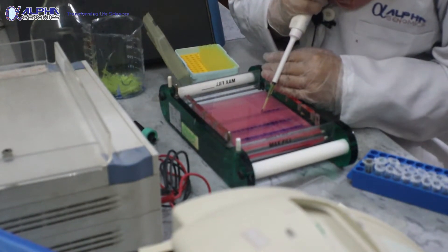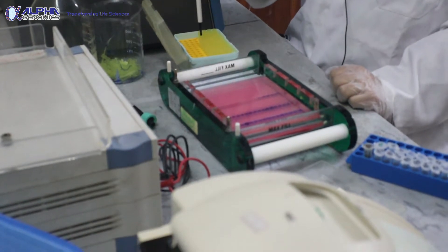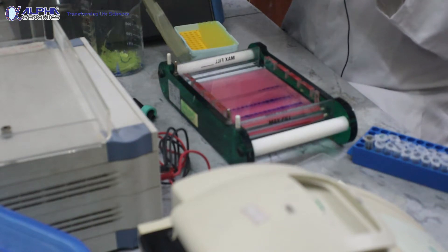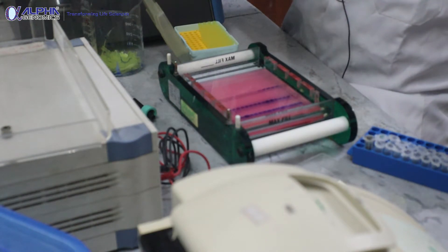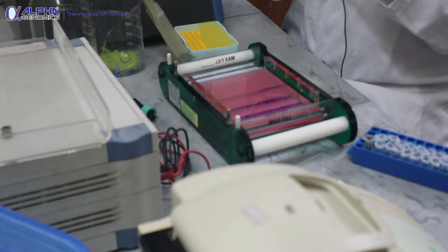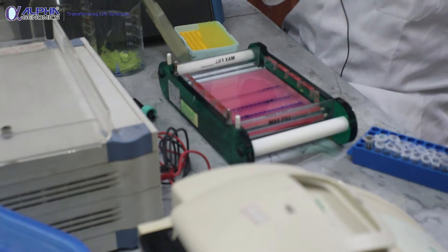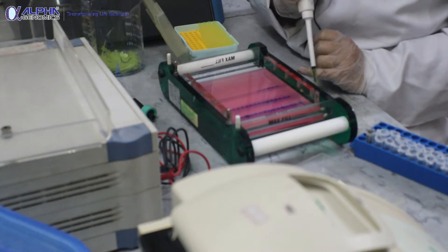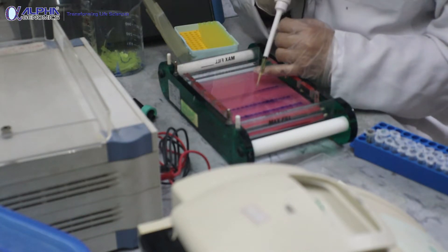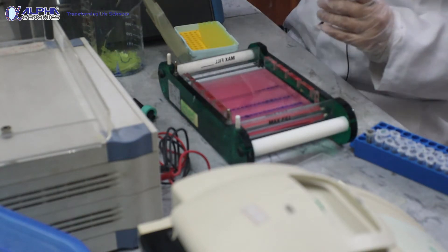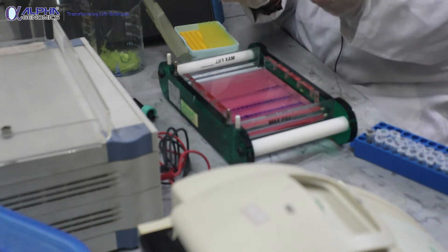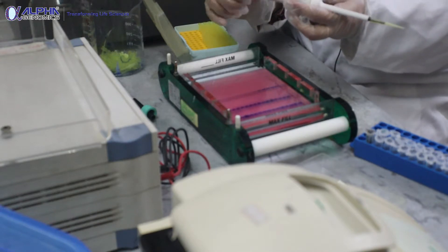Coming back to 1% agarose gel, for the preparation we normally use two kinds of buffers: TBE (Tris boric acid and EDTA) and TAE (Tris acetic acid and EDTA). They are dependent upon the concentration - what kind of concentration you're using. When you prepare these stock solutions they are normally in concentrated form, typically 10x or 50x.